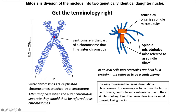These spindle fibers attach to the kinetochores on the centromere and help separate the sister chromatids to the opposite poles during mitosis. So to summarize: centrioles are the structures to which spindle fibers are attached; two centrioles in animal cells form a centrosome; and centromeres hold sister chromatids together.